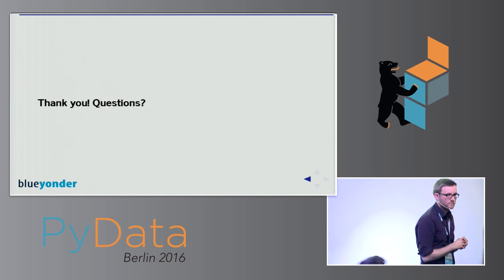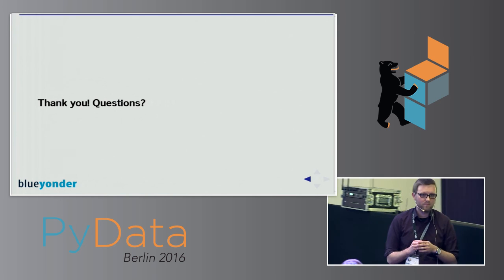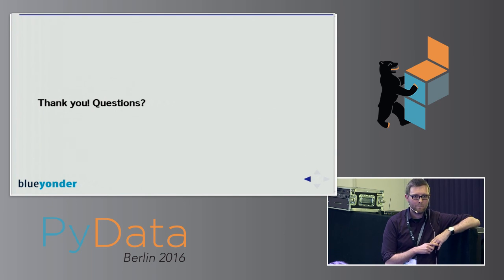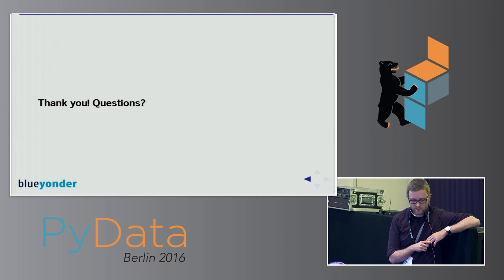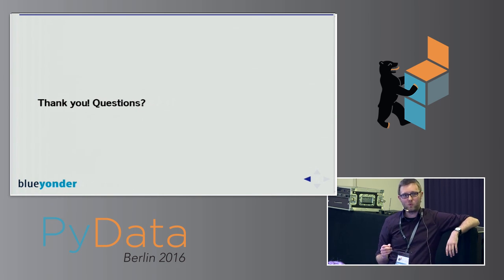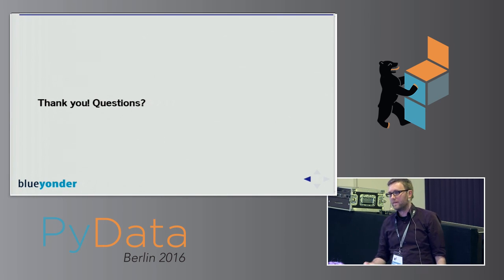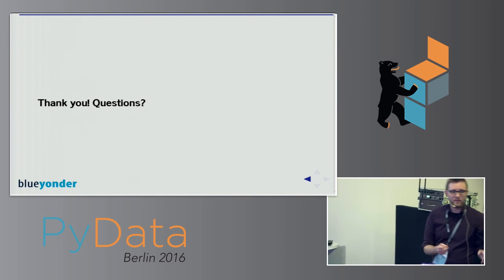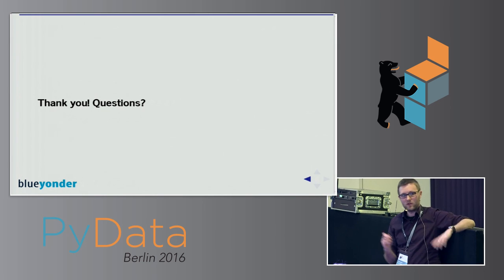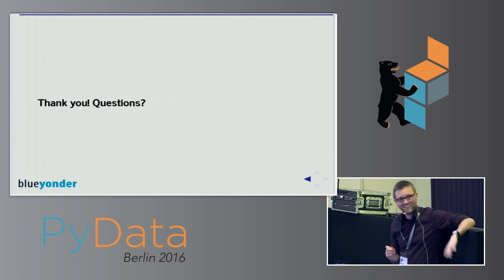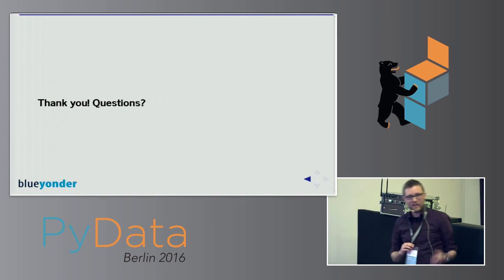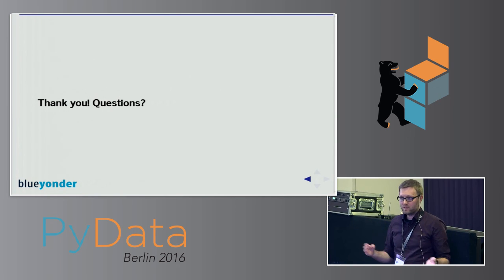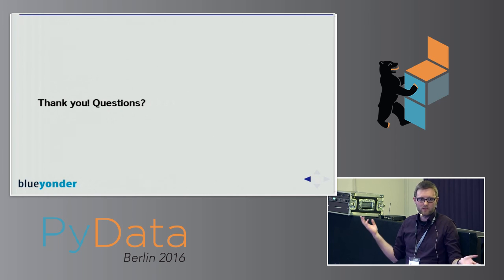Regarding the use of Dask within a function: we haven't really done it, but one team member experimented with it. The idea is that you get a computation graph out of Dask and it might be possible to use that graph and execute it within Yamal. That would be the basic concept.